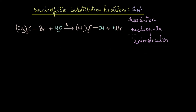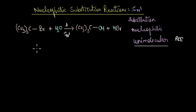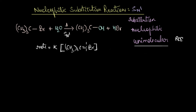SN1 stands for Substitution Nucleophilic Unimolecular. Unimolecular means there is only one molecule in the transition state of the rate-limiting step. For example, tert-butyl bromide reacts with water to give a tertiary alcohol and HBr — a typical SN1 reaction. The rate of this reaction depends entirely on the concentration of the substrate (tert-butyl bromide), making it first order in alkyl halide and zero order in the nucleophile (water). Since the rate does not depend on the nucleophile concentration, the nucleophile plays no role in the transition state of the rate-determining step.